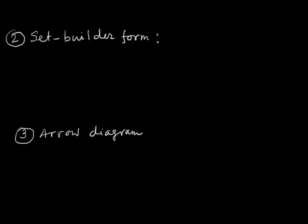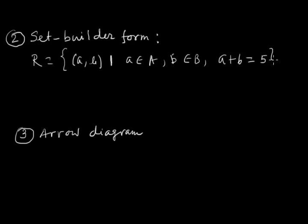Next is set builder form. There we write R equals ordered pair (A,B) such that A belongs to A, B belongs to B, and A plus B equals 5. This is set builder form or arrow diagram.